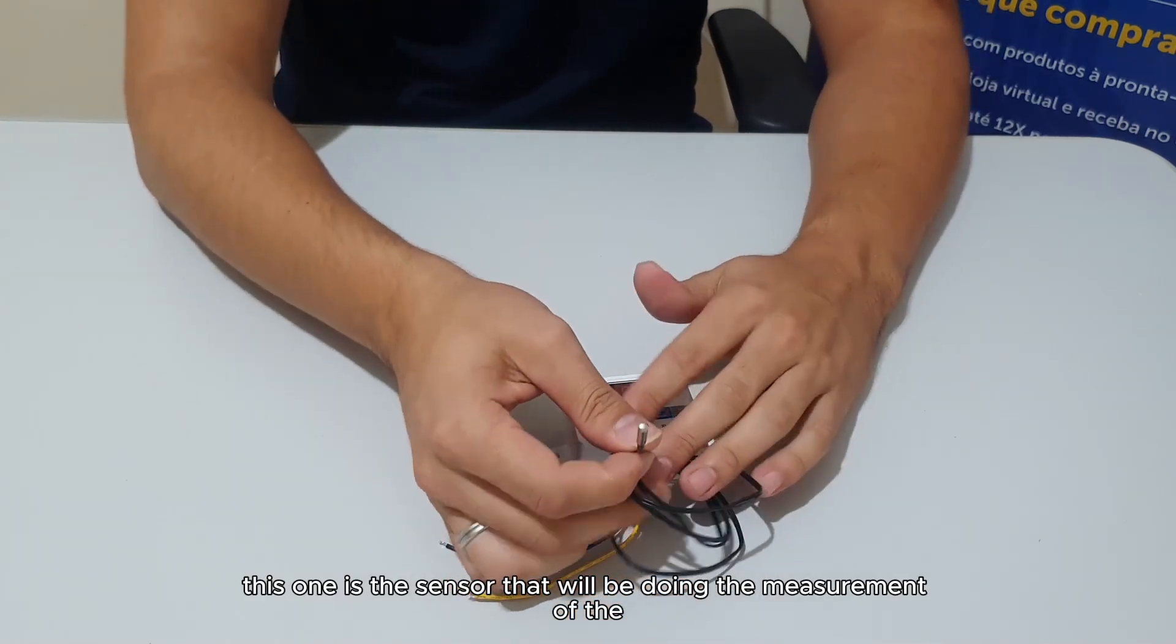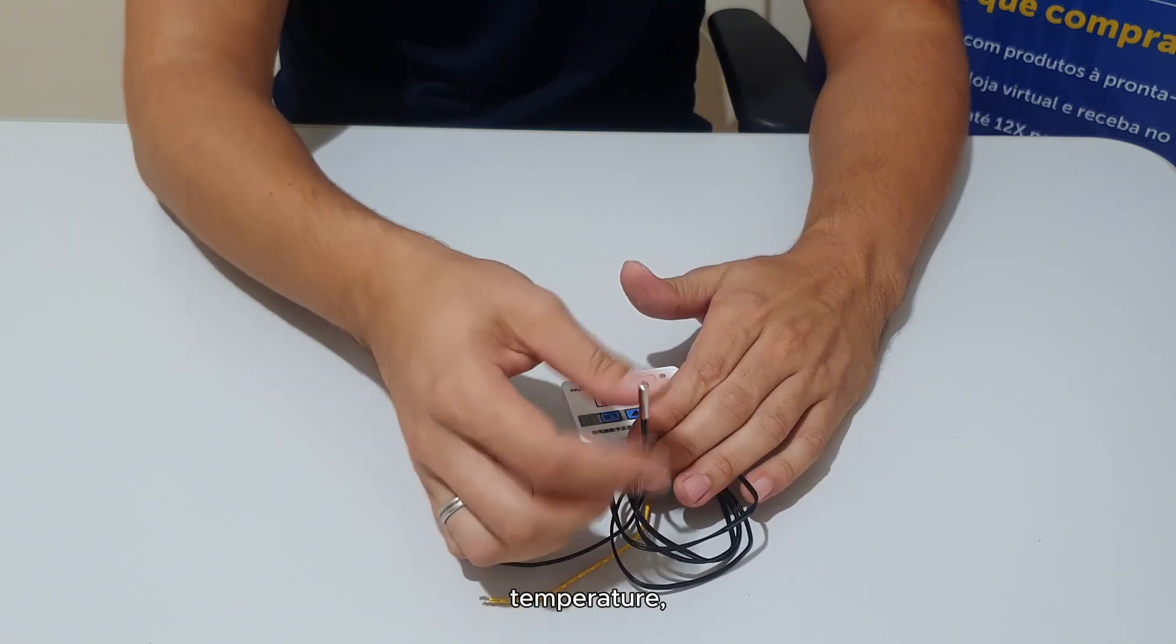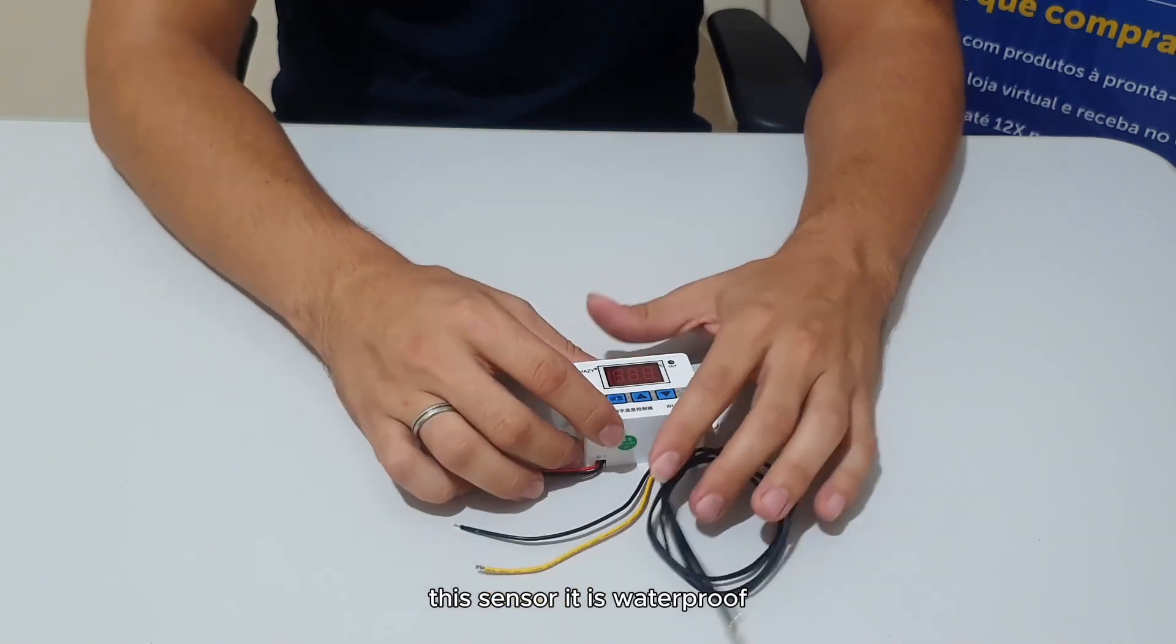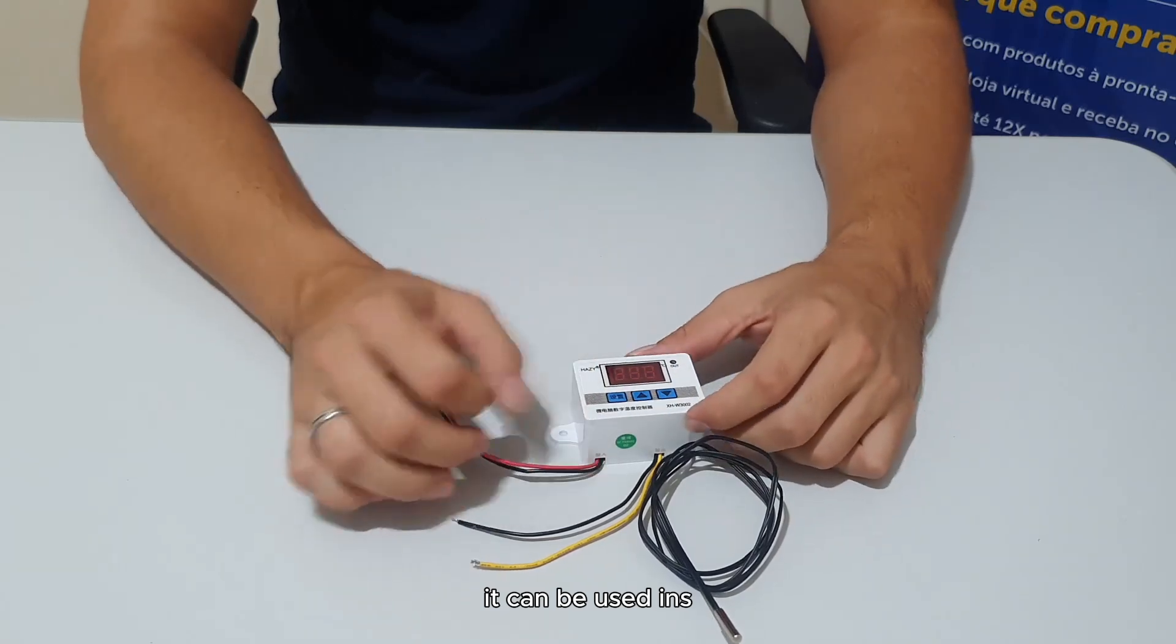This is the sensor that will be measuring the temperature. Observation: this sensor is waterproof. It can be used in environments that have water.